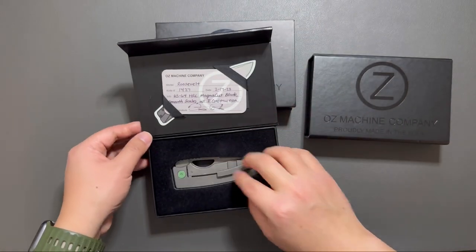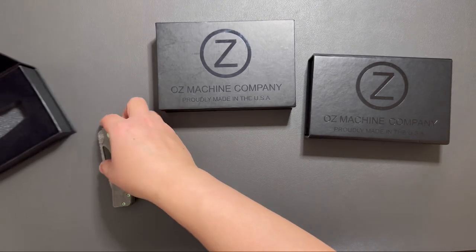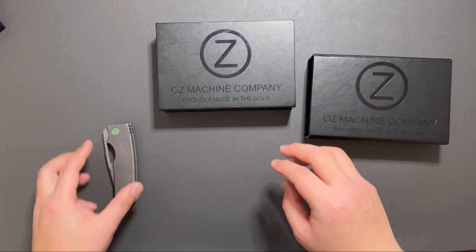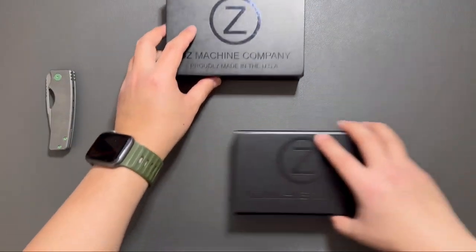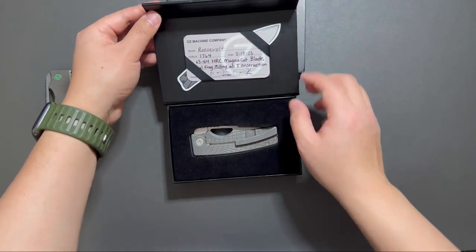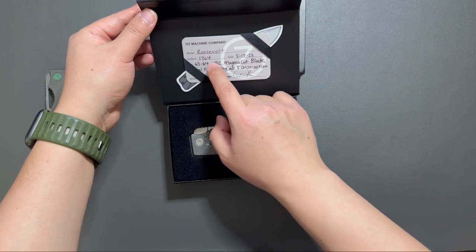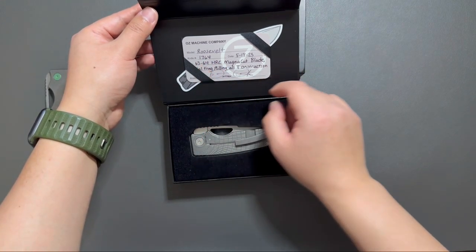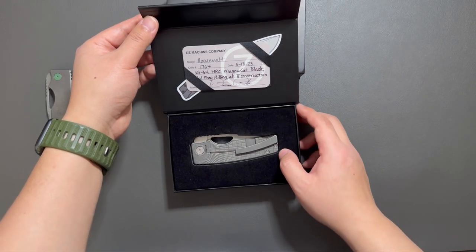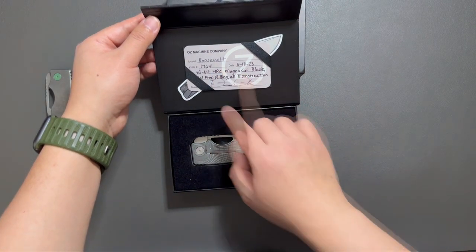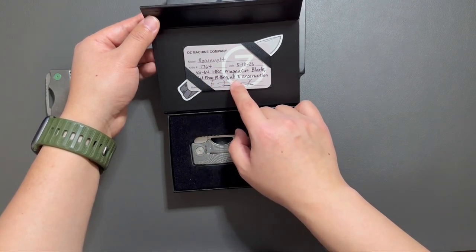Okay so that's the first one. Let's do this one. This one is 1764, and also in 63 to 64 HRC magnet cut. And this one has radio flag mailing pattern and old tie construction.